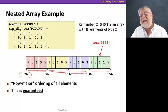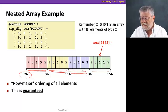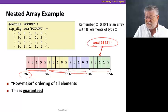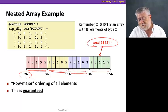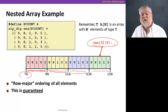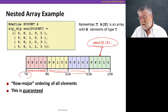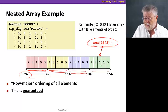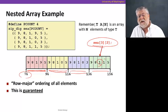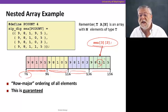This is a guaranteed organization in memory — we can rely on this. So when we write something like an access to SEA[3][2], that means we want the fourth row — index 3 starting at zero — and then the third digit within that row, within that zip code, or that zip digit type.